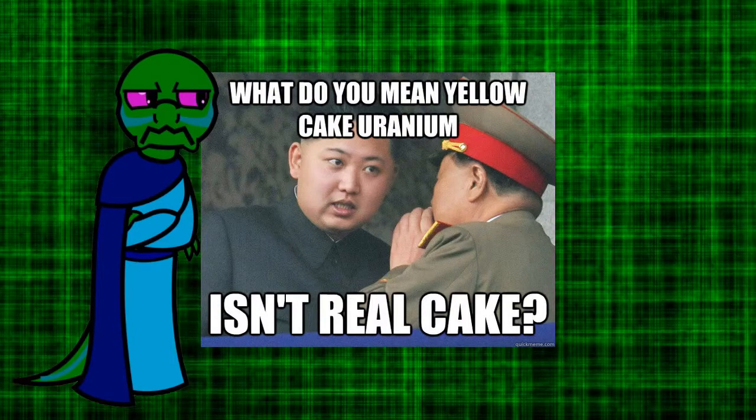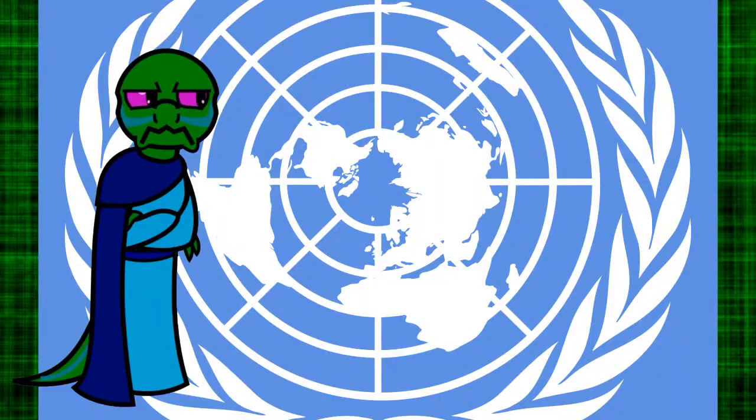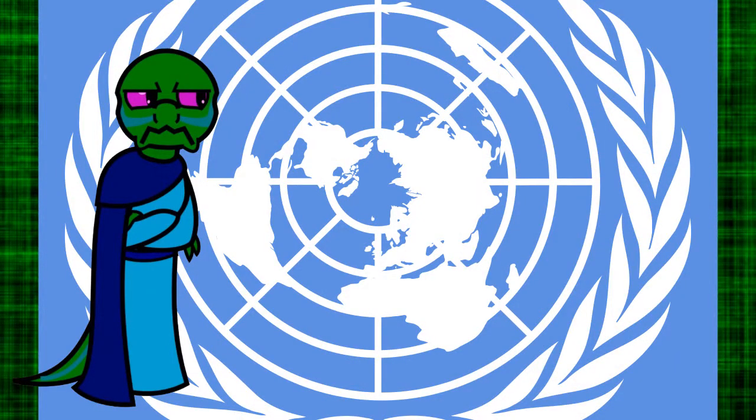Then other municipalities in dark blue states like California or New York will start to consider it. This is how it spreads all over the country. Before you know it, Kim Jong-un is going to be able to vote in the U.S. presidential election if he happens to be at the U.N. in New York City in November.